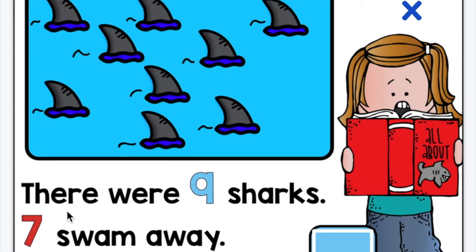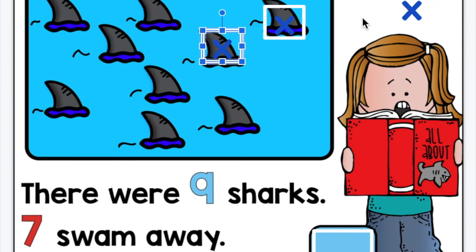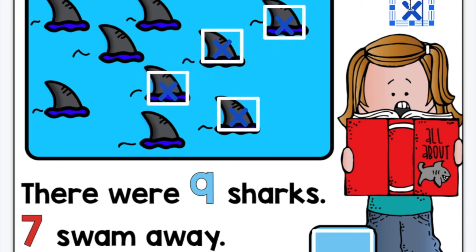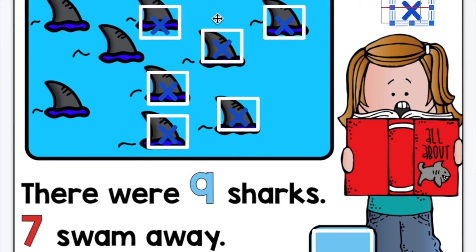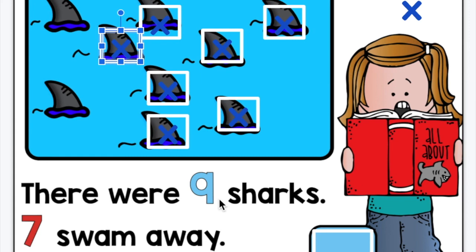Let's do one more together. The next one says there were nine sharks. Seven swam away. How many are left? So I have nine, take away seven. I take my X's and cross out seven: one, two, three, four, five, six, seven. So now I've taken seven sharks away because they swam away. There were nine to start, and how many are left? One, two. So nine take away seven is two.